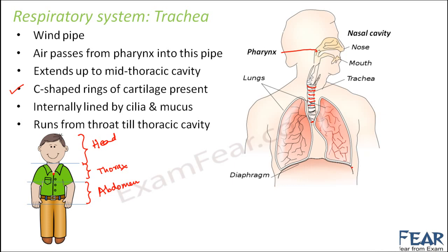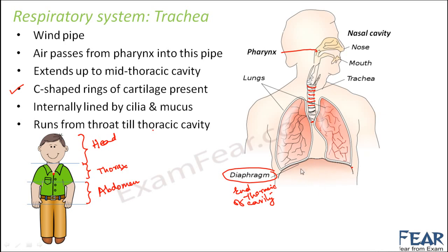The trachea runs from the throat to the thoracic cavity. The end of the thoracic cavity is marked by the diaphragm, a dome-shaped structure, which separates the thoracic cavity from the abdominal cavity. The abdominal cavity contains most of the digestive organs such as the stomach, small intestine, liver, and pancreas, while the thoracic cavity contains the lungs and a portion of the trachea.